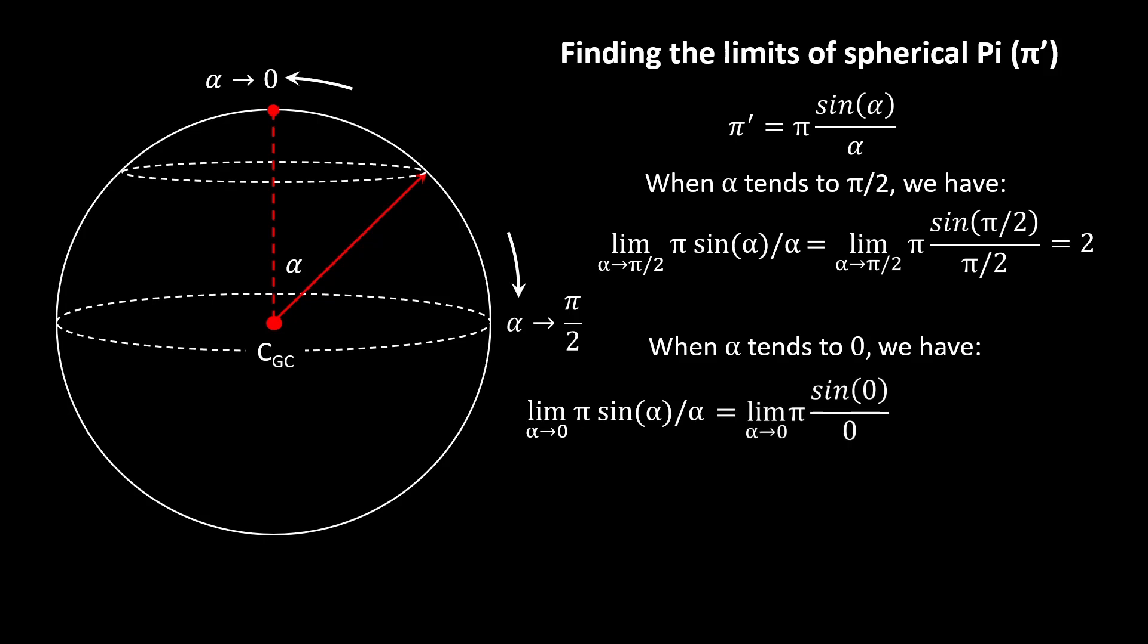...is the limit of π sin(0) divided by 0. Since sin(0) is 0, we have 0/0, and that's indeterminate. But we have a way of getting rid of that.